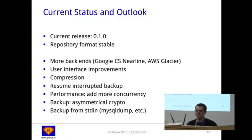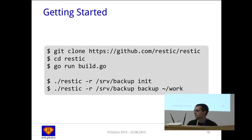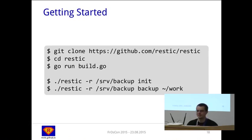We may also support asymmetric crypto on backups, so a server can back up data without the attacker gaining access to old backups if the server is hacked — the private key used to decrypt data would not be on the server. Other workflows like reading a backup from stdin, for example MySQL dump, are also planned. Getting started is really easy: clone the repository, cd into it, and just type go run run.go. Then you can use init and backup, and that's it.